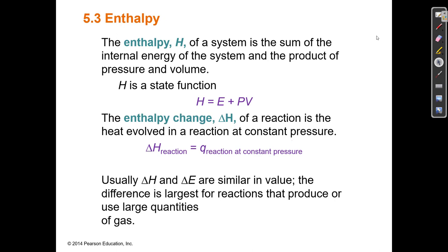The enthalpy of a system is the sum of the internal energy E and the product of the pressure and volume PV. So internal energy plus P times V. The change in enthalpy is defined as the change in energy plus the pressure times the change in volume. It is also defined as the heat of reaction at constant pressure.